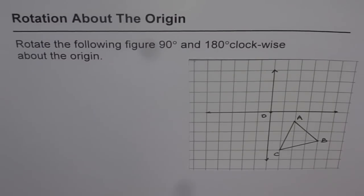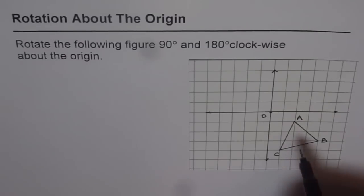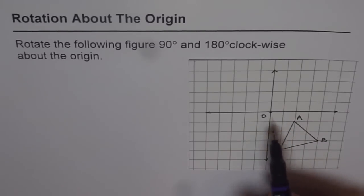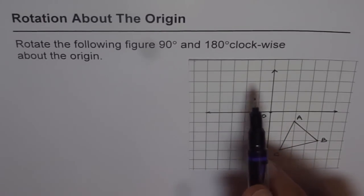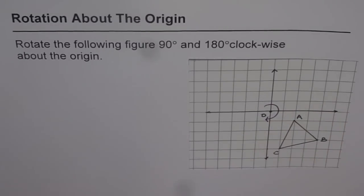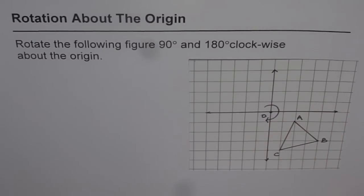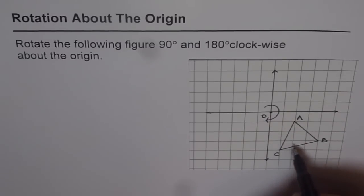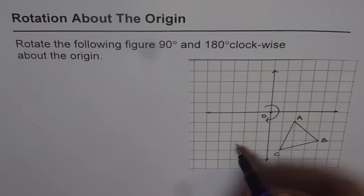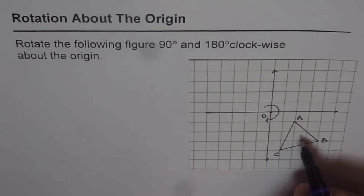Rotation about origin. Rotate the following figure 90 degrees and 180 degrees clockwise about the origin. We are given a figure — a triangle ABC — which we need to rotate about origin O in the clockwise direction. After rotation, this will have a new position of exactly the same shape and size. That means a congruent triangle will be there, but at a new location. We need to find the new location of this triangle.